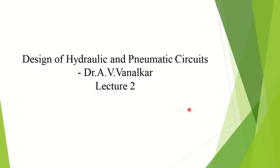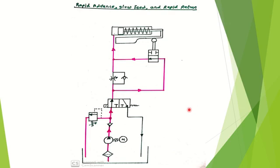Welcome to the second lecture on design of hydraulic and pneumatic circuits. Here we are going to discuss the first circuit, referred to as rapid advance, slow feed, and rapid return. The questions asked in university examinations include: draw and explain the travel and feed hydraulic circuit (Winter 2016), give the procedure and method of control of acceleration and deceleration in a single acting cylinder (Summer 2019), and draw and explain the rapid advance, slow feed, and rapid return hydraulic circuit. The answers to all three questions are essentially the same.